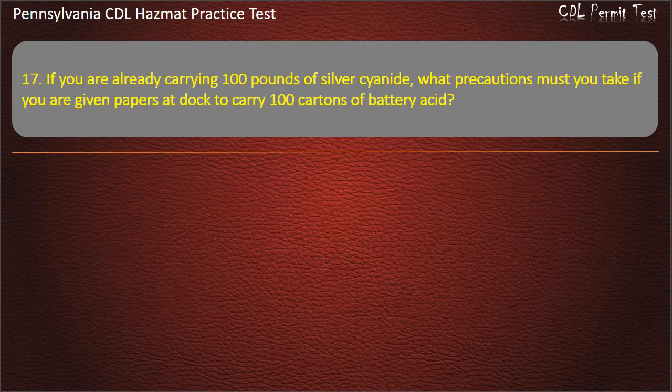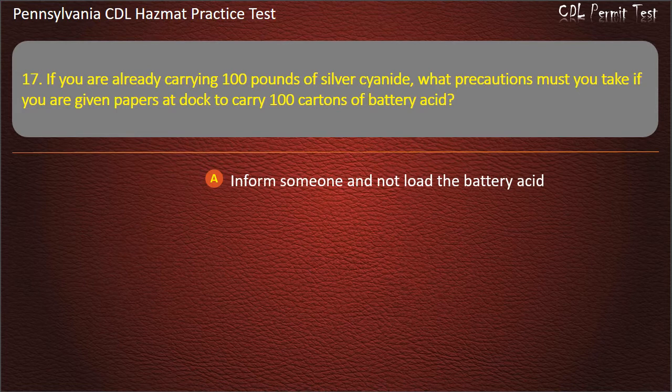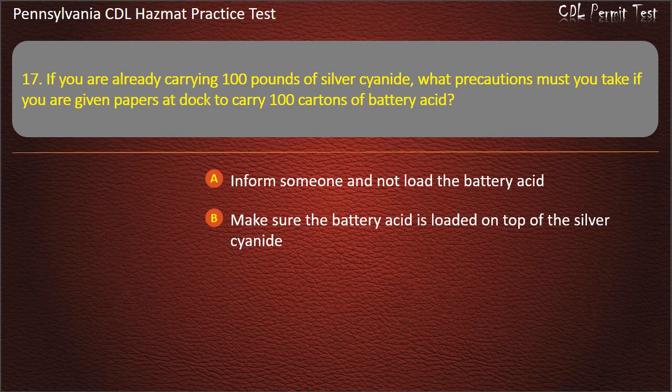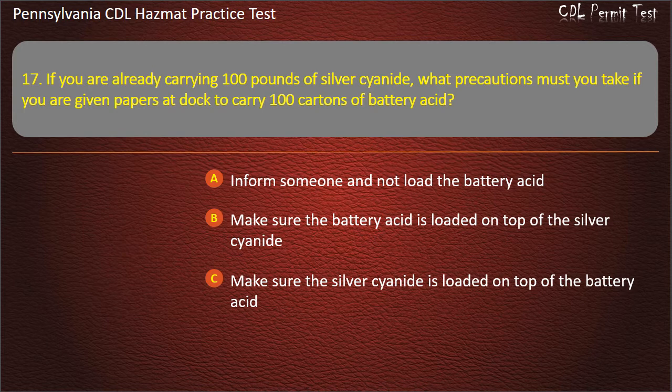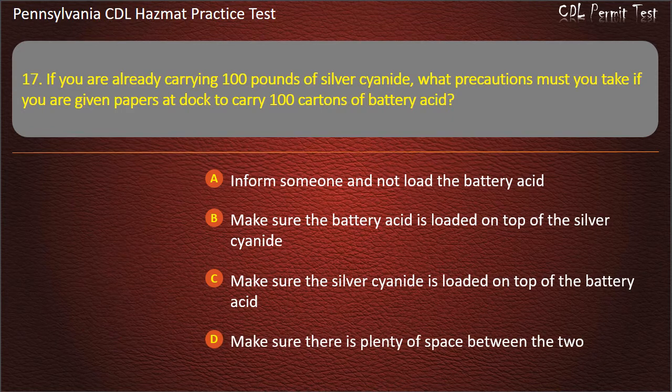Question 17. If you are already carrying 100 pounds of silver cyanide, what precautions must you take if you are given papers at dock to carry 100 cartons of battery acid? Options: Inform someone and not load the battery acid; Make sure the battery acid is loaded on top of the silver cyanide; Make sure the silver cyanide is loaded on top of the battery acid; Make sure there is plenty of space between the two. Answer: Inform someone and not load the battery acid.